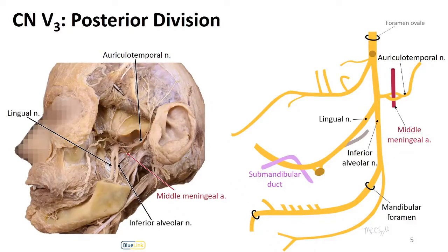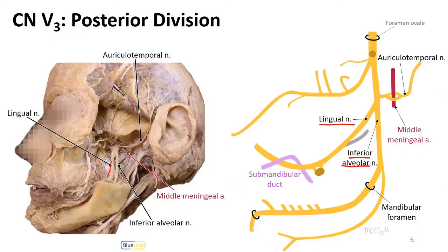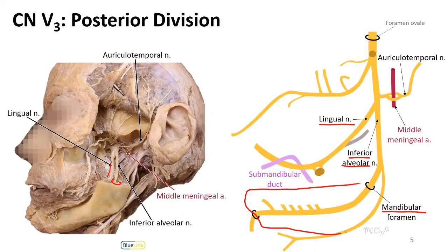Next, we see the two major branches of the posterior division. A little bit more medially and anteriorly, we see the lingual nerve. The lingual nerve here passes medial to the mandible and then enters into the oral cavity. Versus the inferior alveolar nerve, which is a little more lateral and a little more posterior, and will enter into the mandible through the mandibular foramen. You can see that represented here as well, and all of this space would be within the mandible.